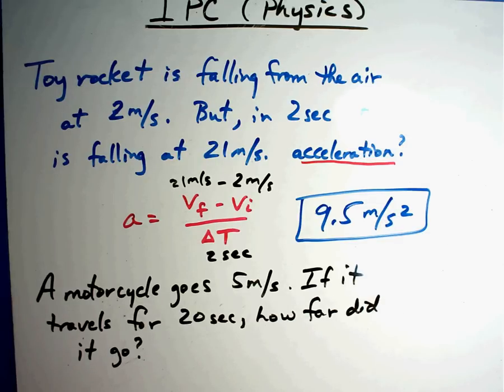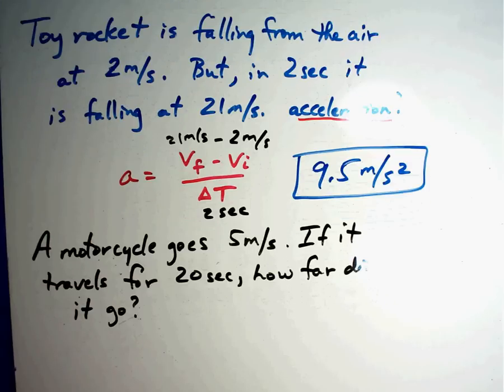Bottom question. So the first one was acceleration. A motorcycle goes 5 meters per second. If it travels for 20 seconds, how far did it go? How far? Speed. And let's see where the numbers would go.